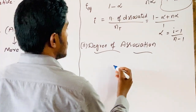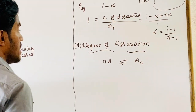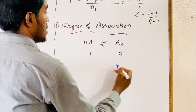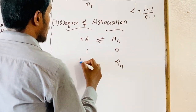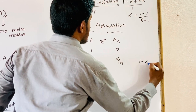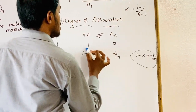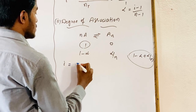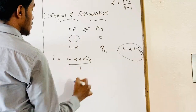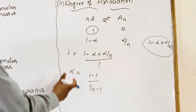Similarly, for the degree of association, n moles of A may combine to form the molecule A_n. Initially, moles of A are 1 and of A_n are 0. At equilibrium, moles of A are (1 minus alpha), and moles of A_n are alpha by n. The total number of moles after association is (1 minus alpha plus alpha by n), divided by the initial number of moles 1. This gives the Van't Hoff factor i. From this, alpha equals (i minus 1) divided by (1/n minus 1).